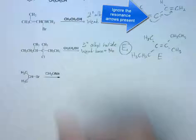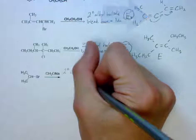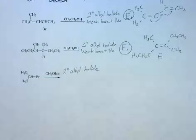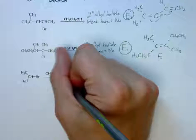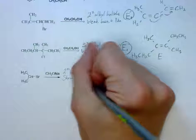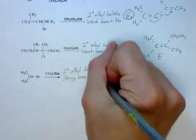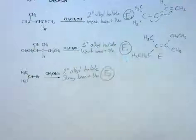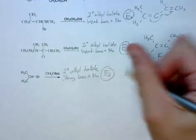For the last one we have a secondary alkyl halide and we have a strong base and nucleophile. Therefore this will be an E2 process and the product will be this.